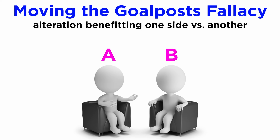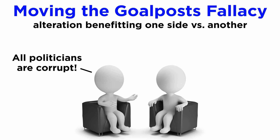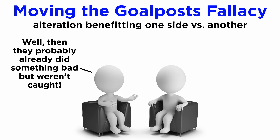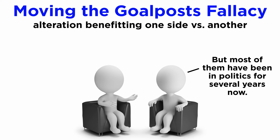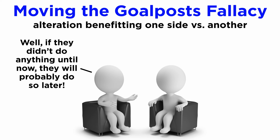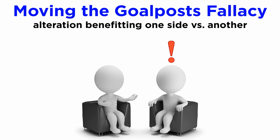An example would be a discussion between person A and person B. A would say: all politicians are corrupt. B could respond: but in this administration only a minor percentage have been convicted with corruption. And A would shift the goalpost to: well, then they probably already did something bad but weren't caught. B could respond: but most of them have been in politics for several years now — surely they'd have been caught by now if they had done anything unlawful. To which A could shift again: well, if they didn't do anything until now, they will probably do so later. And so on and so forth, never directly addressing B's arguments.